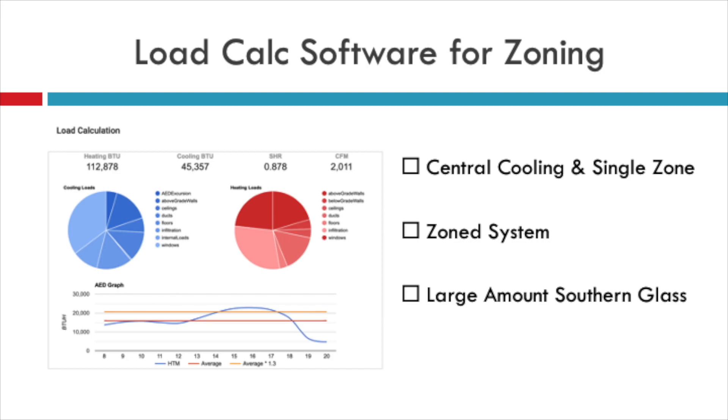When selecting load calc software for zoning, there are a few key features to look for. Number one, it needs to provide an AED graph — at least for the block load. Hopefully it can provide that AED graph for each zone as well. If not, this may require multiple load calculations in your software. As you can see in this particular AED graph, there's a lot of glass facing south. If I wanted to zone this system, I'd have to go back and do a separate load calc for each zone to confirm compatibility.